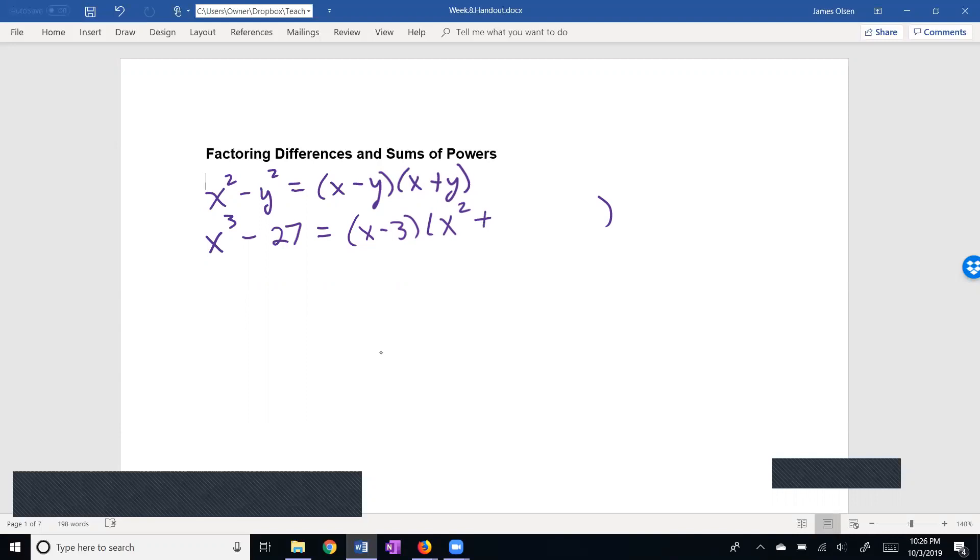Then I'm going to be decreasing the power on x. I have x squared, x to the first power, and I'm going to be increasing the power on the second base which is 3. And in my third term, I'm going to have x to the zero power which is 1 and 3 squared which is going to be 9.